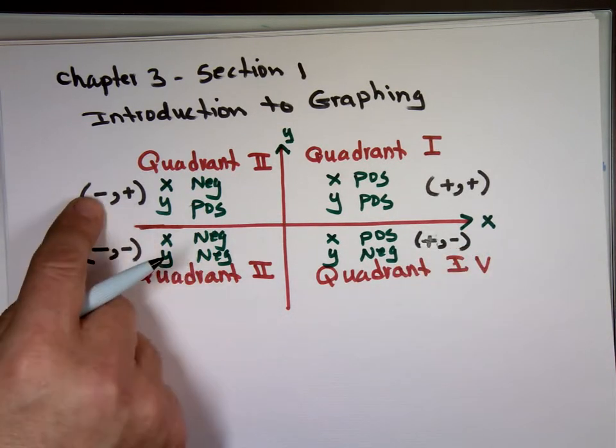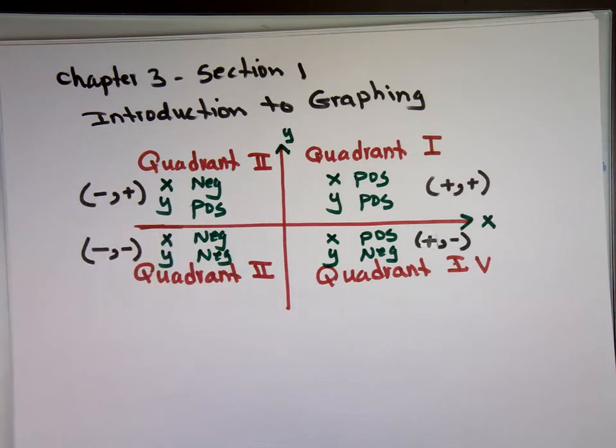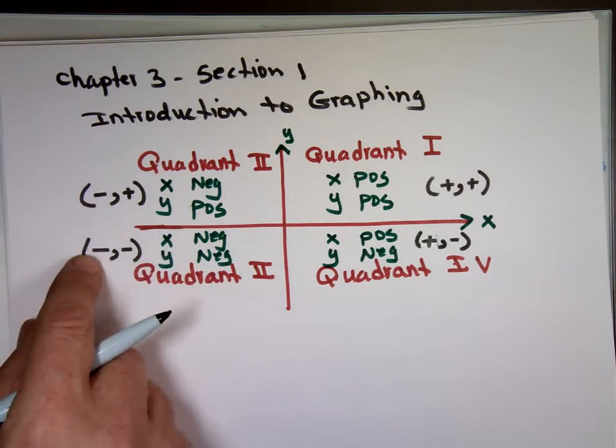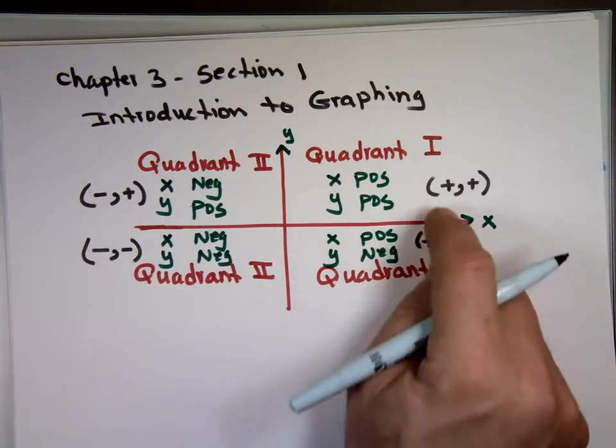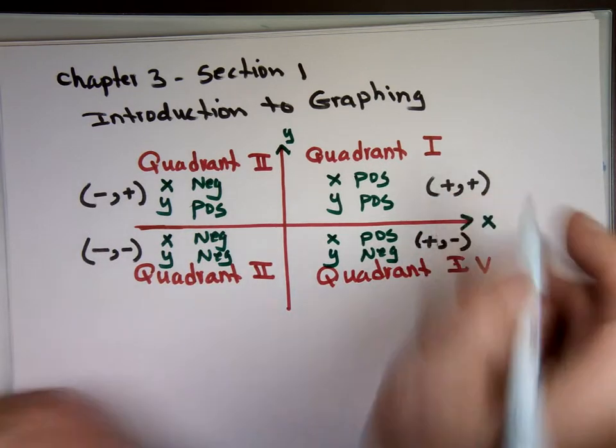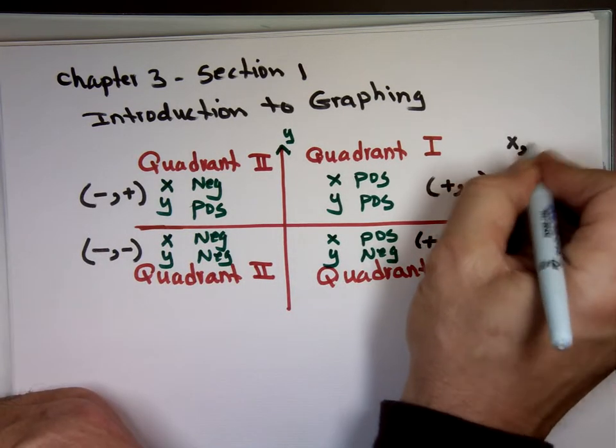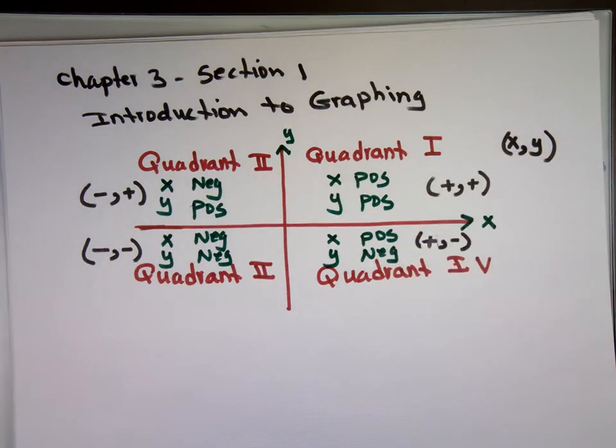This is x is negative, y is positive. This one, x is negative, y is negative. x is positive, y is positive. So it's always x first, then y second. Always. Just like a point. When you label a point, it's always x, comma, y.